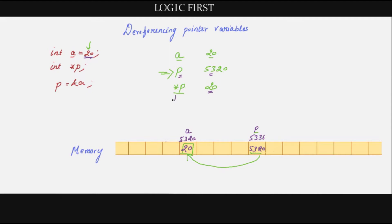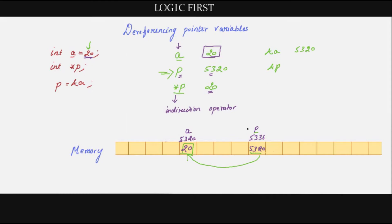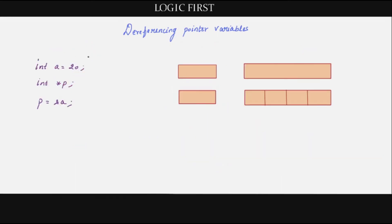The star used here is known as the indirection operator. Instead of directly accessing this value with the help of the variable 'a', we are indirectly using the pointer to get this value. If you print &a, the address 5320 will be printed. If you print &p, even though 'p' is a pointer it is also like other variables, so it will also have a memory address — that address 5336 will be printed.